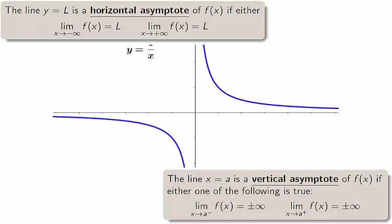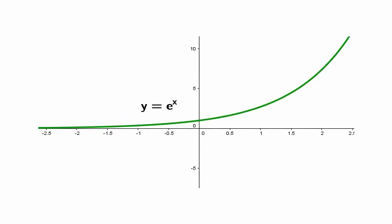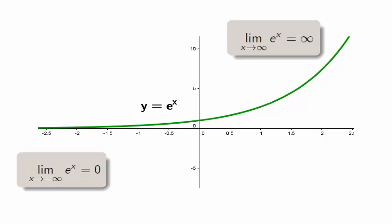Let's look at a few common functions with interesting asymptotes. Exponential functions have no vertical asymptotes, and only one horizontal asymptote y equals 0. The limit as x approaches negative infinity is 0, and the limit as x approaches positive infinity is infinite.